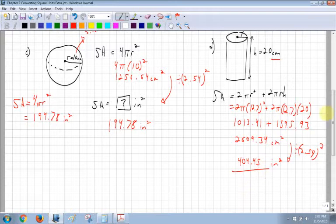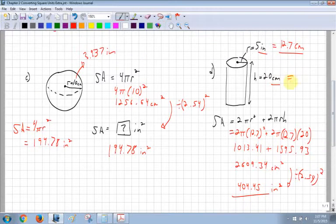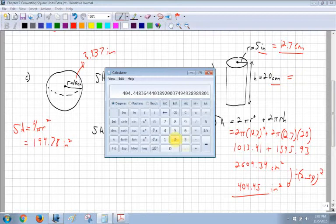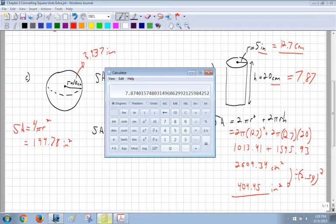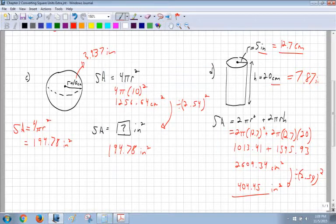We could have easily gone up here and changed this to inches. So I could have gone 20 divided by 2.54 first. I could have gotten 7.87, I think. Yep. And that's in inches. Then I have these two measurements, 5 inches and 7.87 inches. Then I could have found that in inches.